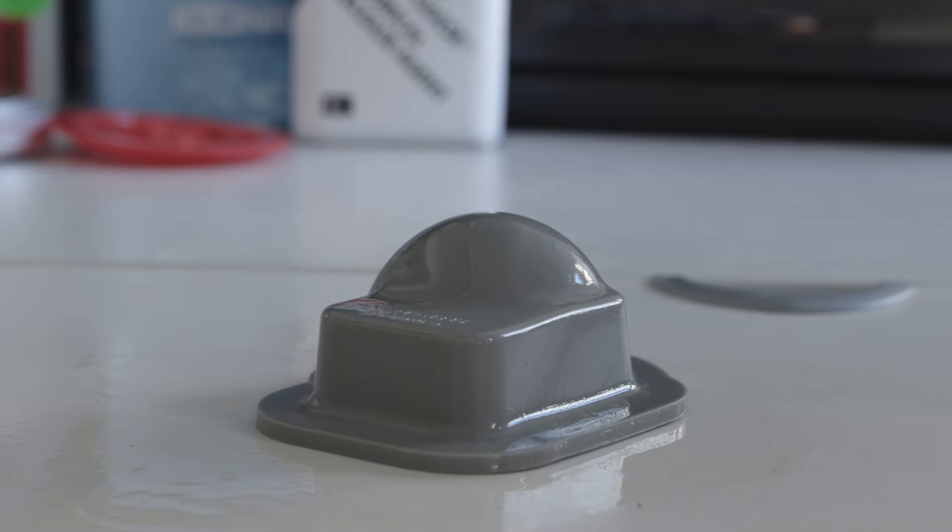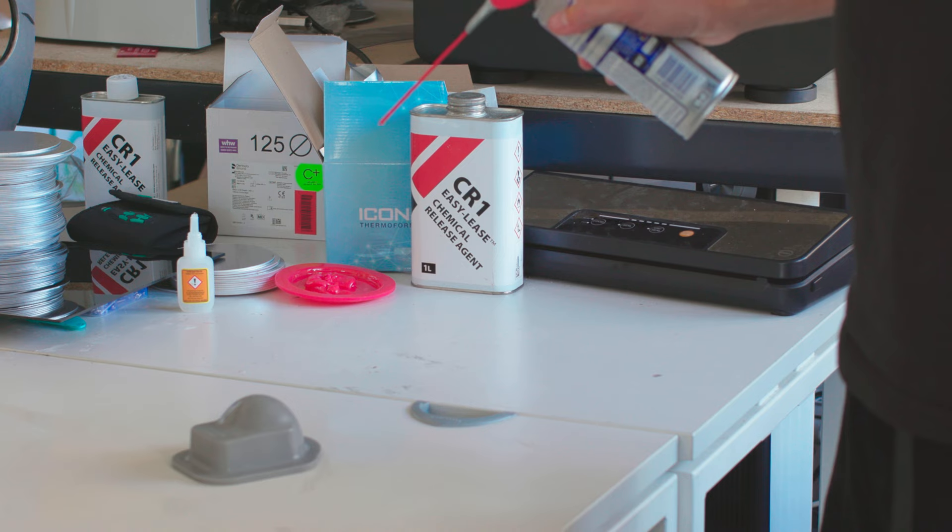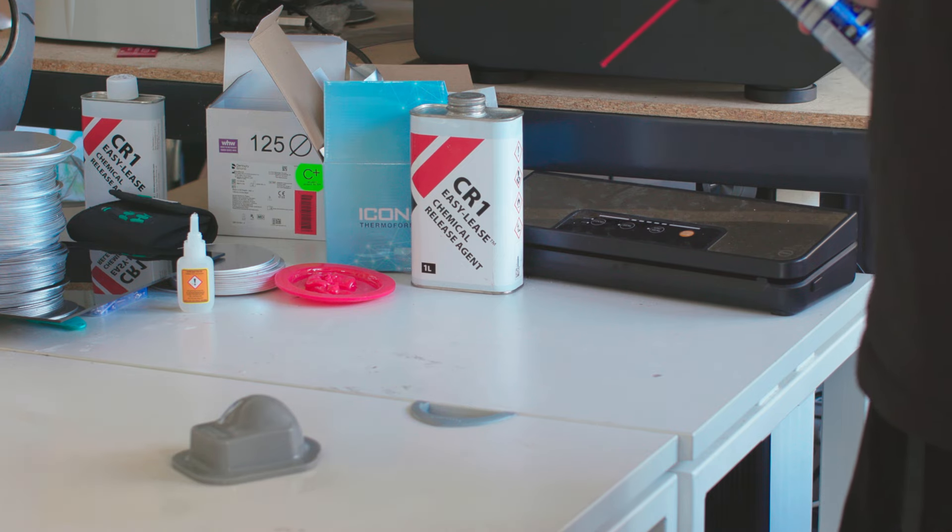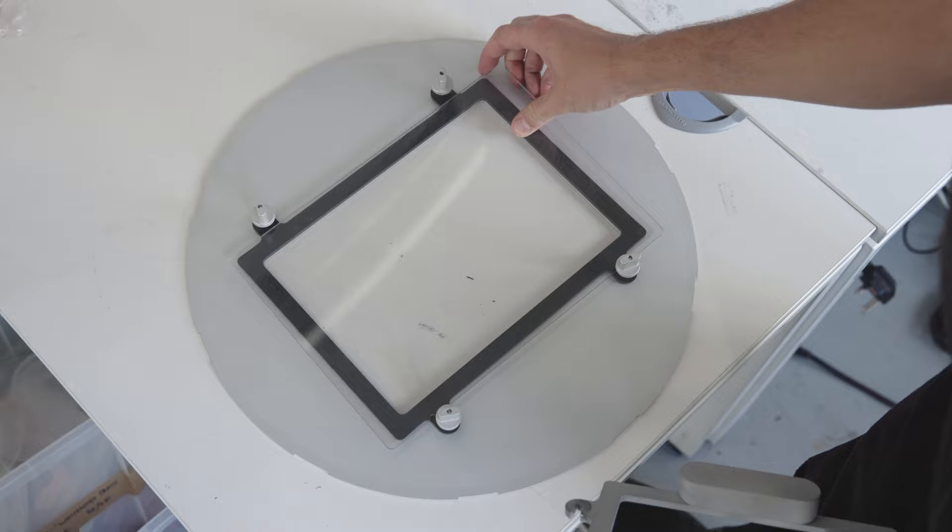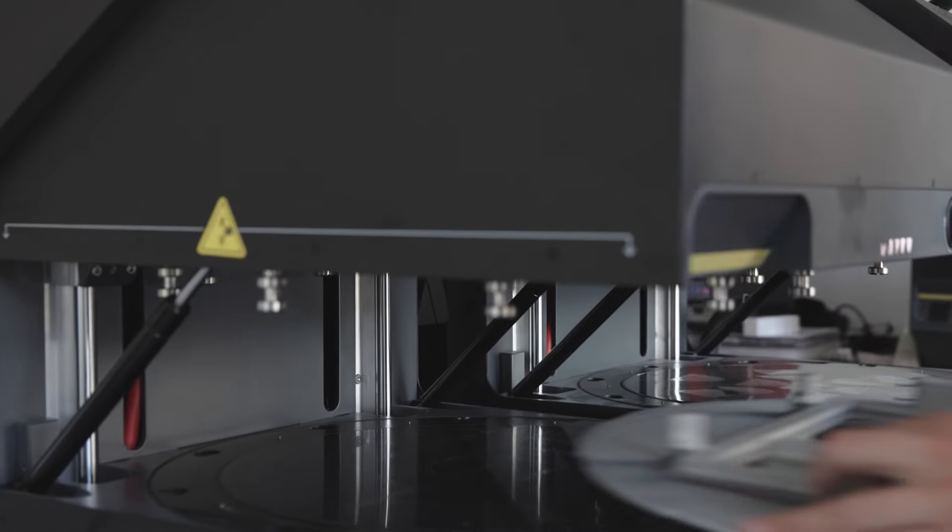To prepare your tool for thermoforming, you want to give it about four coats with a dry PTFE spray. Here we're using an optically clear 3mm pure PETG sheet.